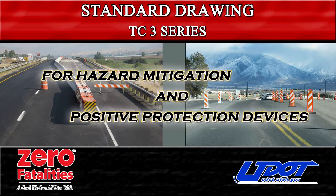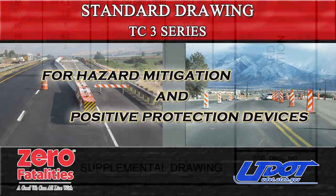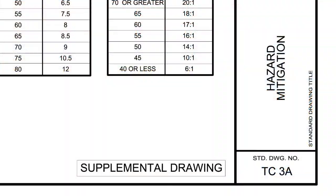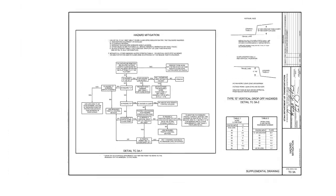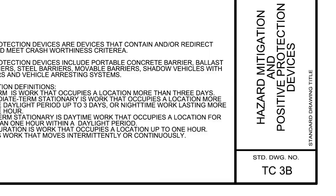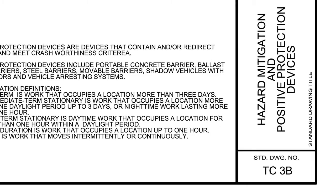During this presentation we will be going over UDOT Standard Drawing TC3 series for hazard mitigation and positive protection devices used within work zones. Here you can see Standard Drawing TC3A hazard mitigation and TC3B hazard mitigation and positive protection devices.